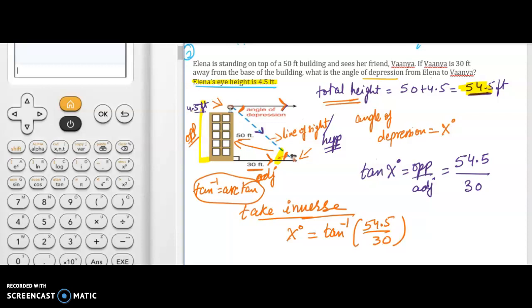Now let's go on the right hand side on the left hand side of the screen and plug everything back in the calculator. Shift tangent 54.5 divided by 30. Then press okay. Here we have the answer. x degree which is nothing but angle of depression. What they are asking for is approximately 61.2 degrees.